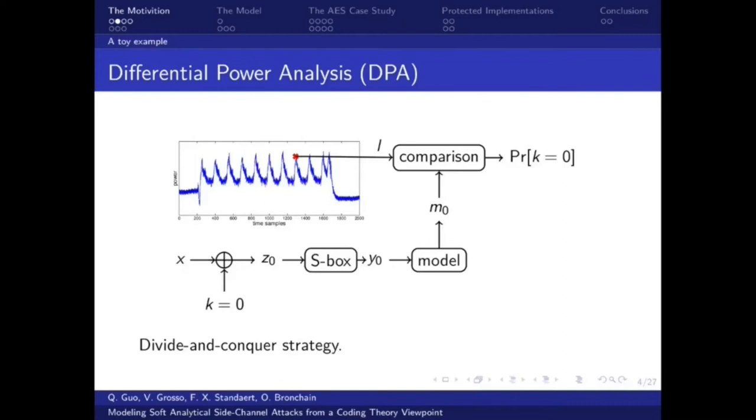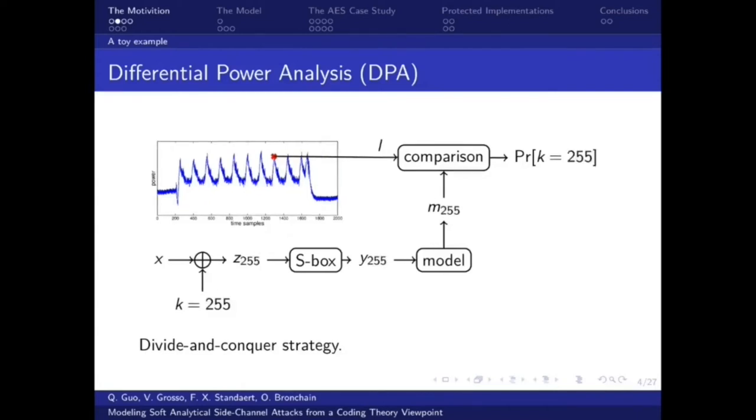Now we introduce a very important class of side channel attacks called Differential Power Analysis, DPA. We know this leakage traces and from this leakage point we know that it corresponds to such a computation that we know the plaintext x and then x will be XORed by a secret key to get z and z will pass this S-box to get y. If we guess key is zero then from the guess we can view the model m zero and compare l with m zero then we can get the probability that the key is zero. Then we exhaustively guess different values of keys and pick the most probable guess. This approach is also called divide and conquer strategy.